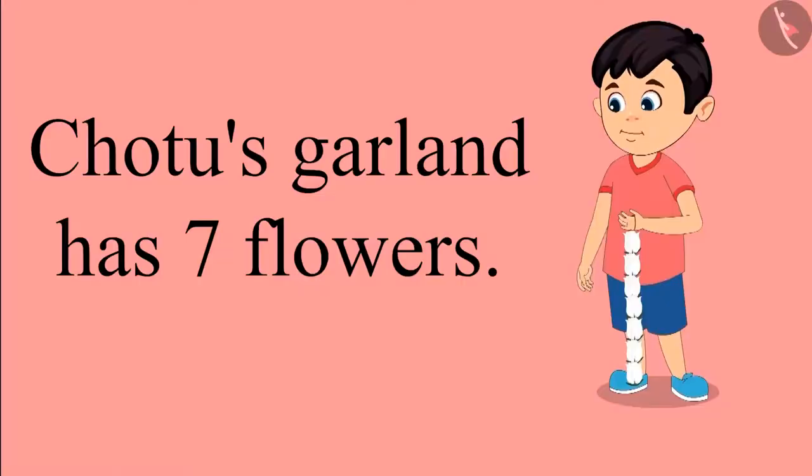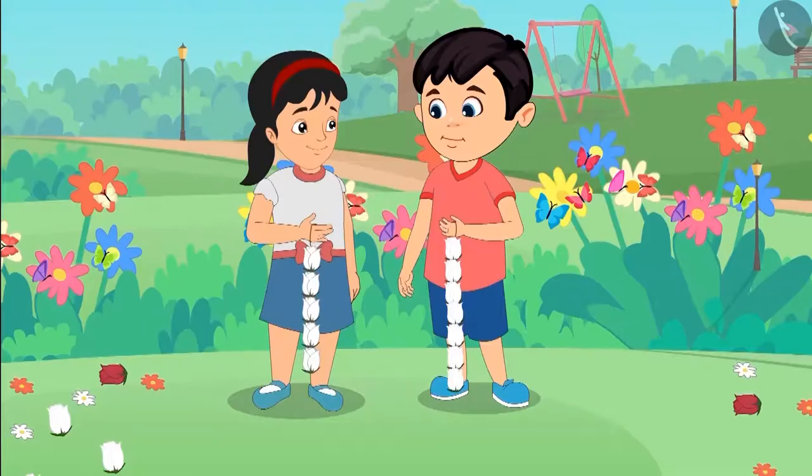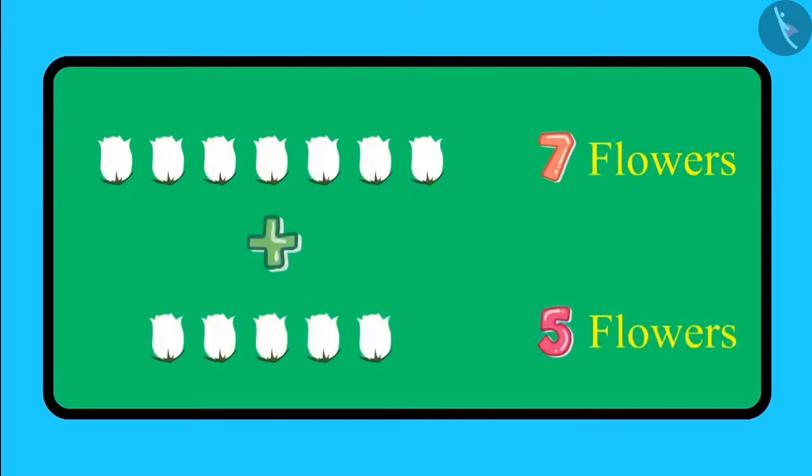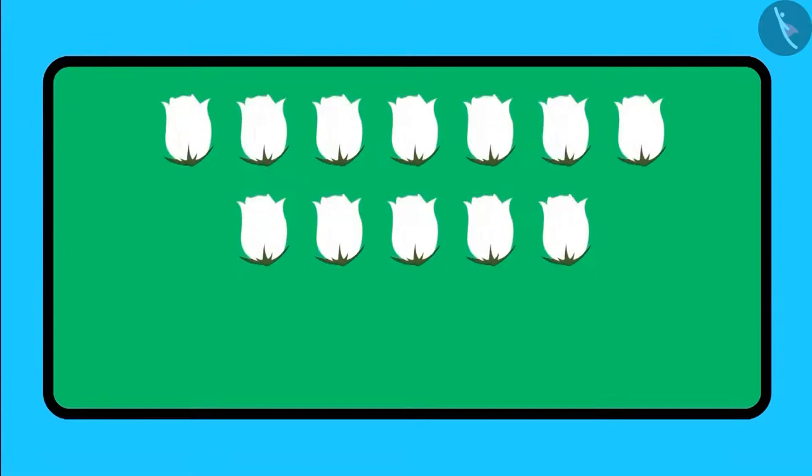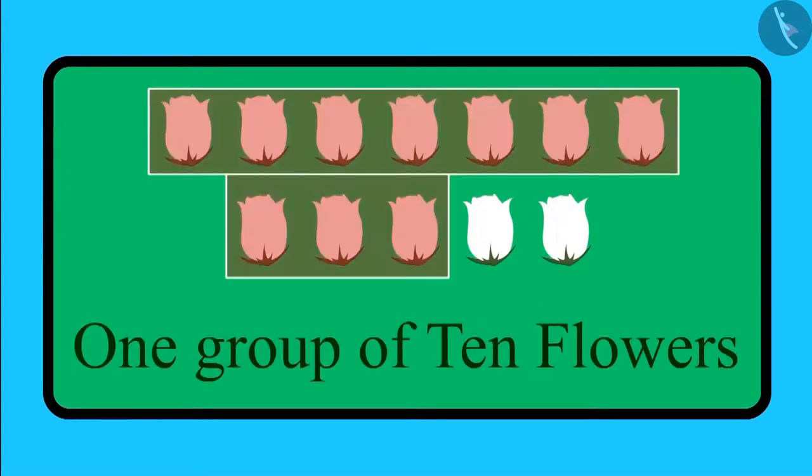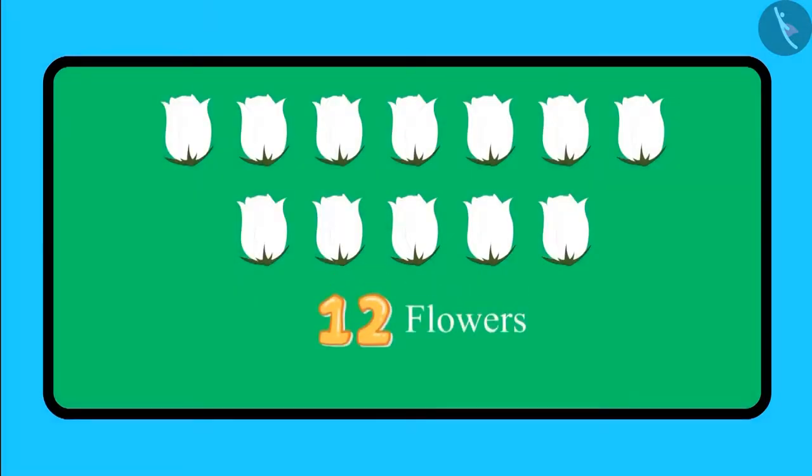Chotu used 7 white flowers to make his garland and Aarti used 5 white flowers in her garland. So children, can you tell us how many white flowers did Chotu and Aarti use in their garlands? Let us see. Chotu added 7 white flowers and Aarti added 5 white flowers. So children, if we look at all the flowers together, we have one group of 10 flowers and 2 more flowers. So that makes a total of 12 flowers.